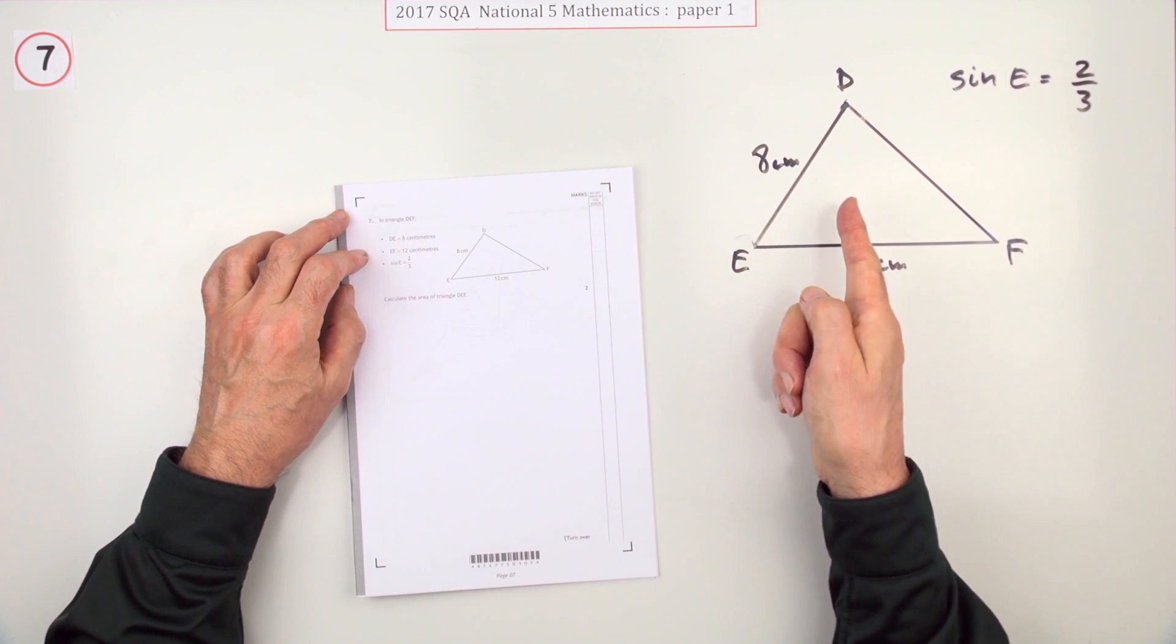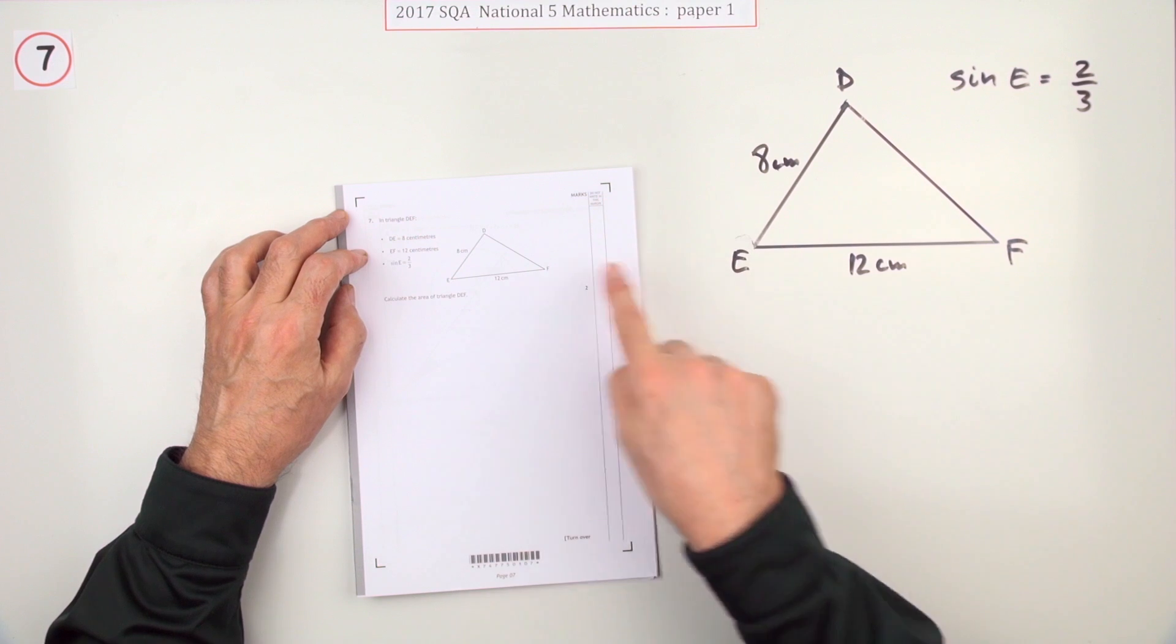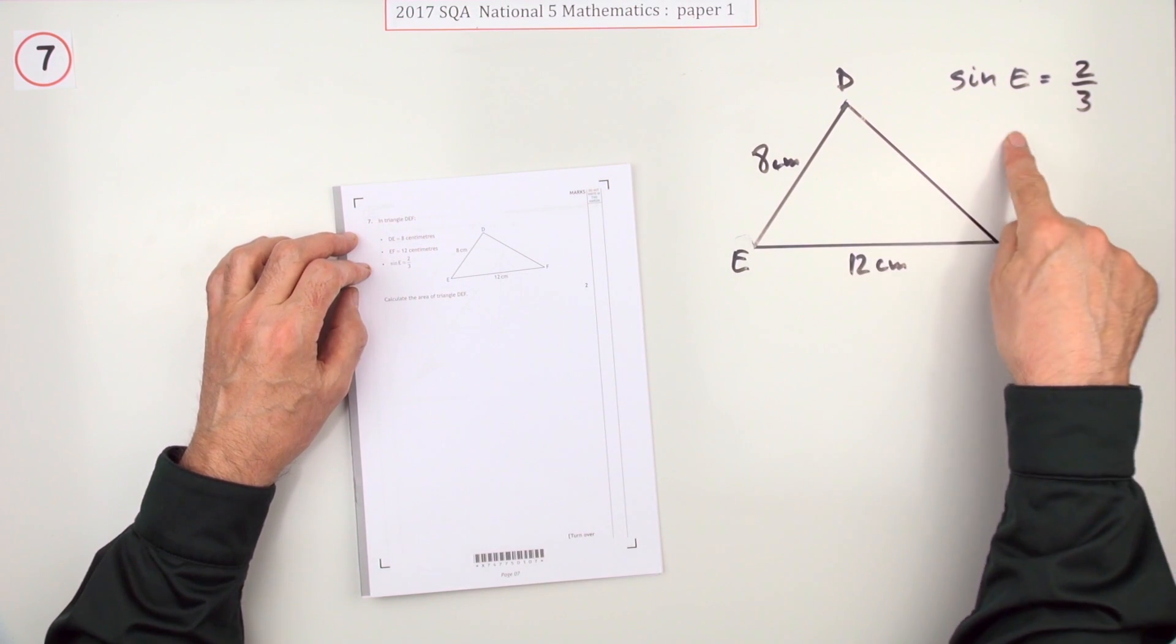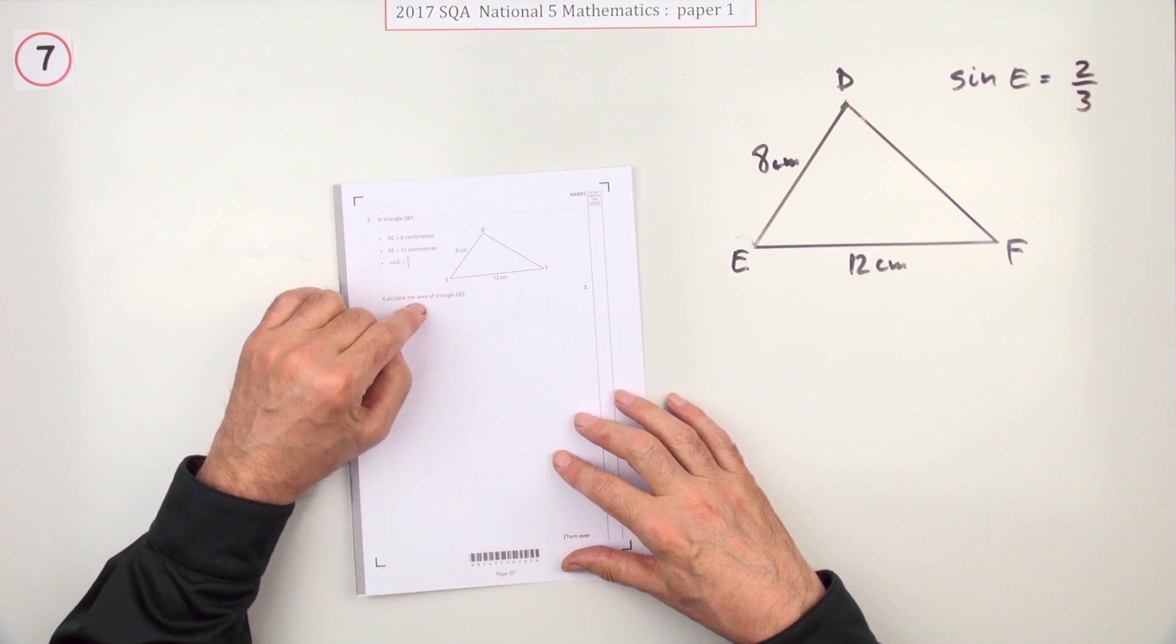Calculate the area of a triangle. You're given a triangle. It gives you two lengths. They're already marked in. And it mentions the sine of an angle. Not the actual angle, but the sine of the angle. What's the area?